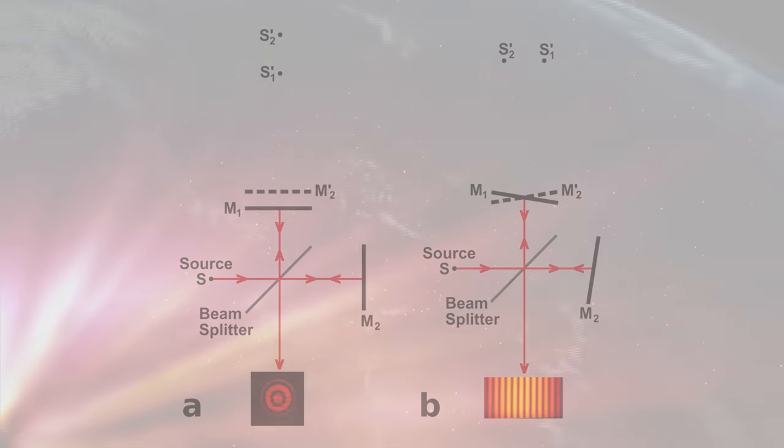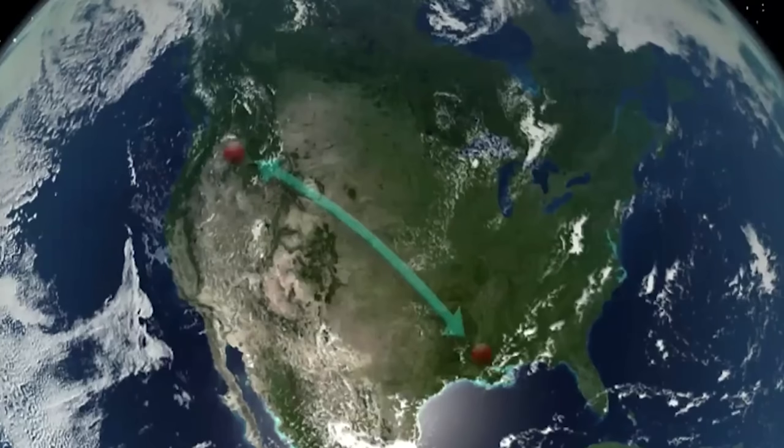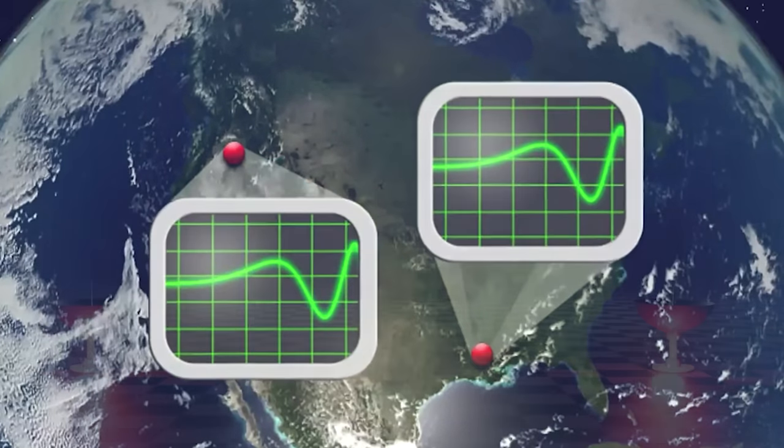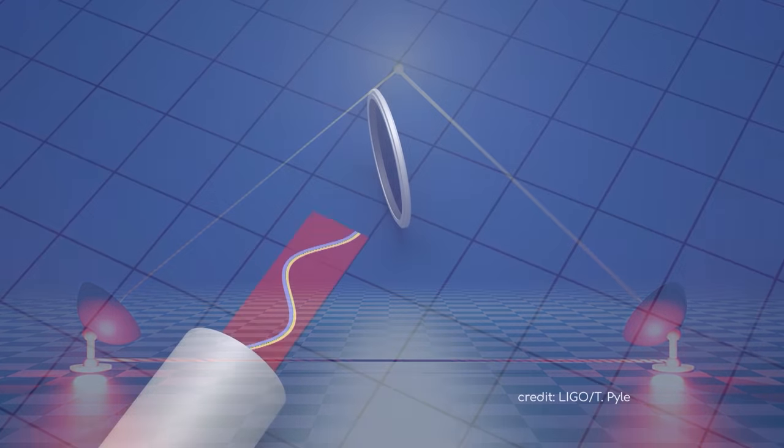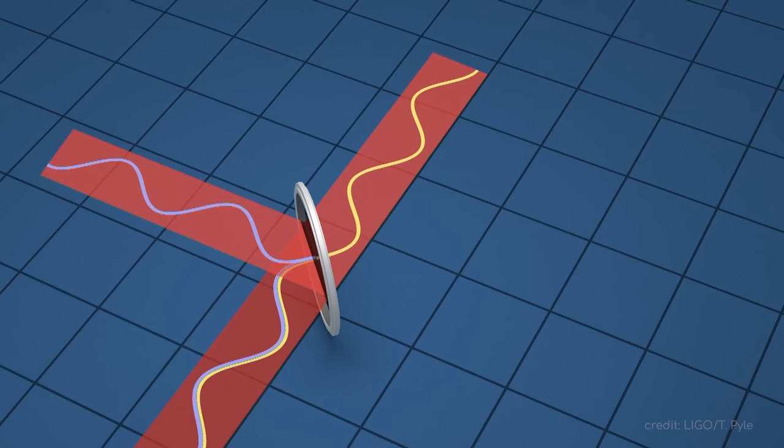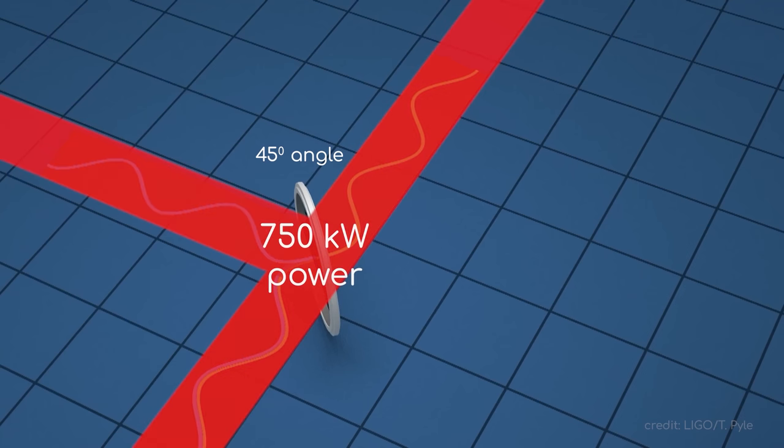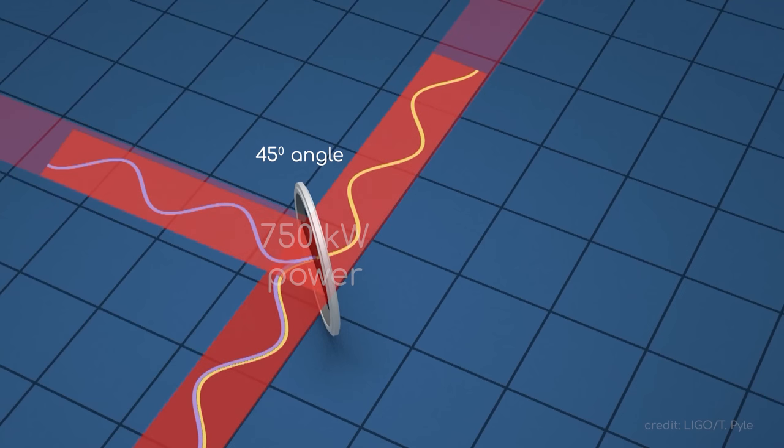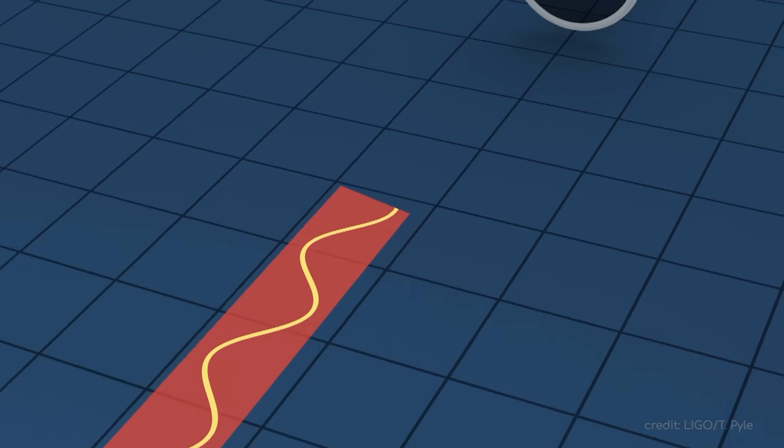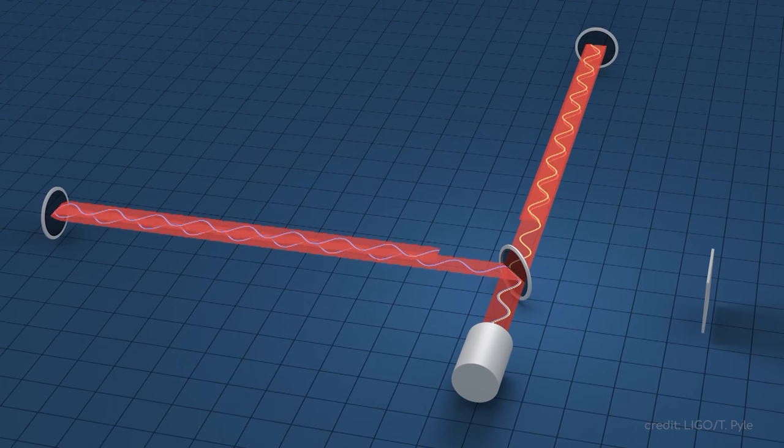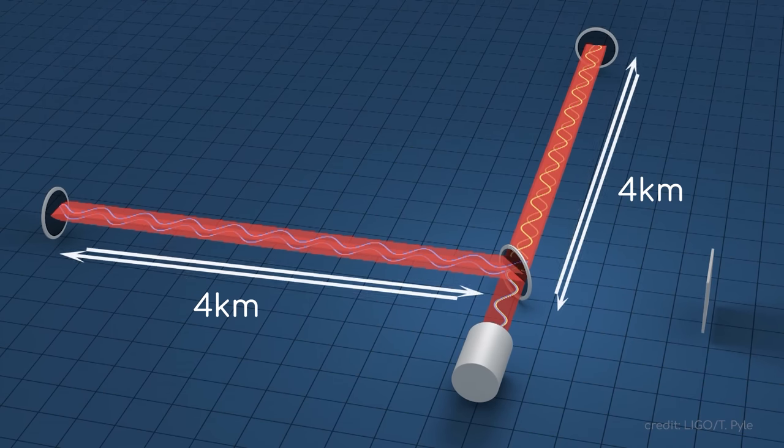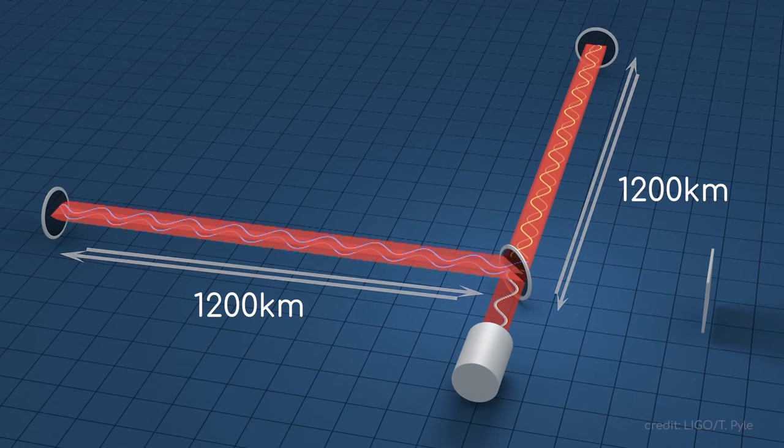Here's how it works. LIGO has two observatories, located in Hanford, Washington, and Livingston, Louisiana. Why two? Well, you need at least two detection sites to triangulate where the signals are coming from. Each observatory continuously fires a powerful laser at a beam splitter positioned at a 45 degree angle. The laser beam has to operate at around 750 kW, powerful enough to vaporize you completely if you got in its path. The splitter then splits the laser beam perpendicularly. The light in each arm travels down a 4km vacuum cavity with a mirror at the end of it. The beams then bounce between this mirror and the recycling mirror at the other end nearly 300 times, increasing the distance from 4km to 1,200km.